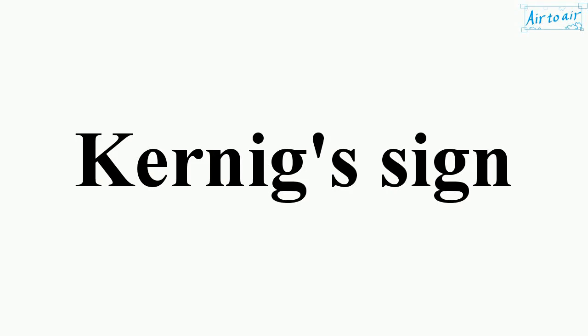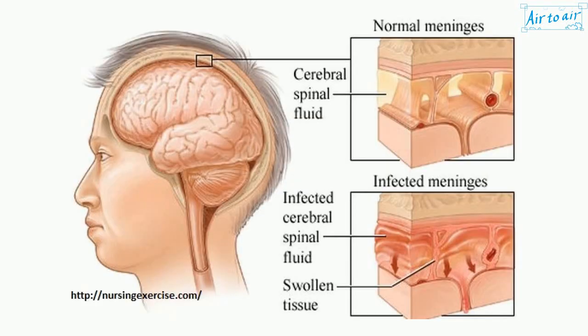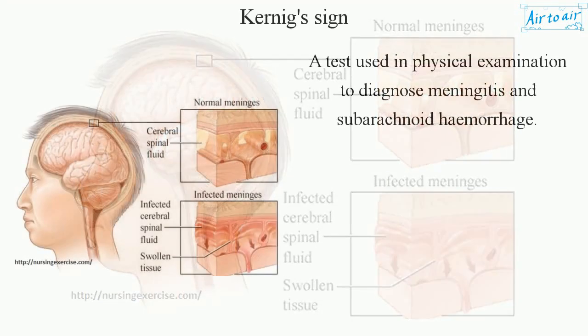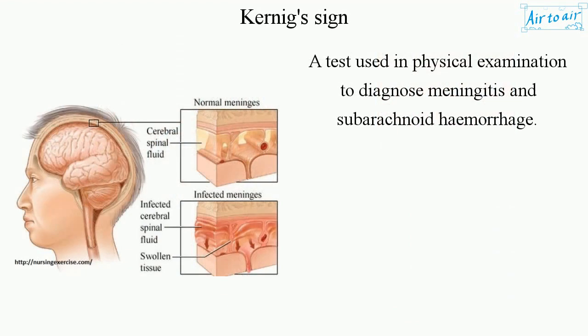Koenig's Sign. A test used in physical examination to diagnose meningitis and subarachnoid hemorrhage.